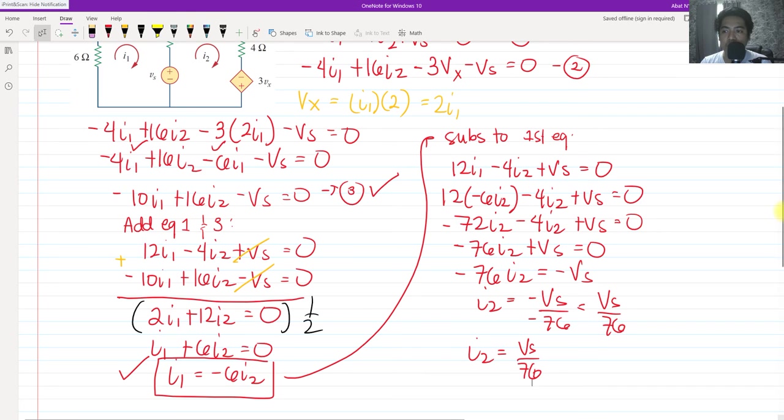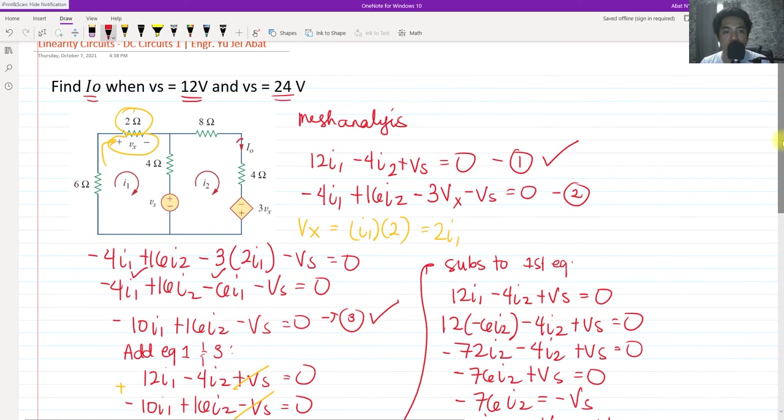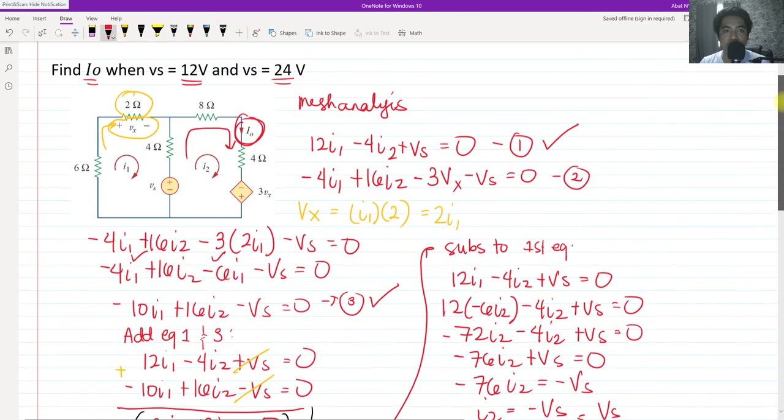Now, if we're going to look at it, what's the relationship of this current I sub 2 to I sub O? That is actually the same. The current I sub 2 that flows here is the same current with the I sub O that we are trying to find. So this in turn is equivalent to I sub O.